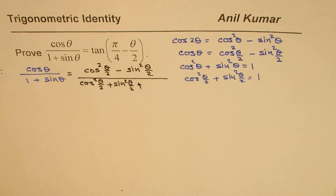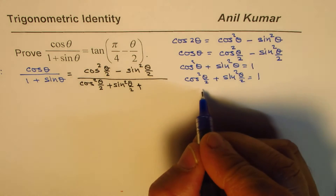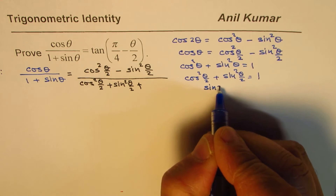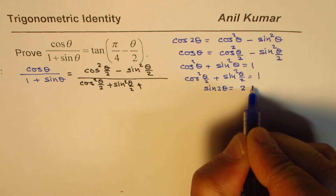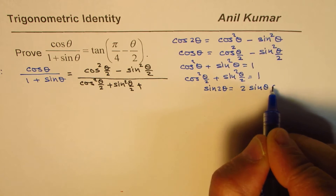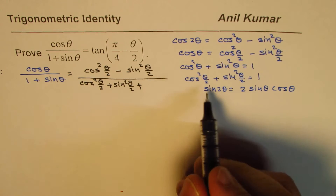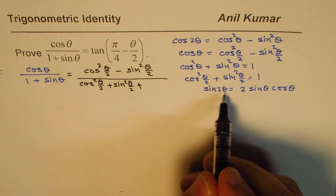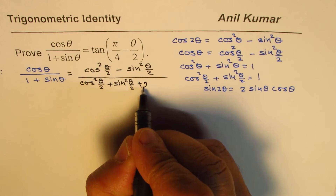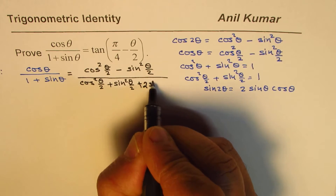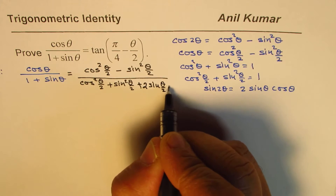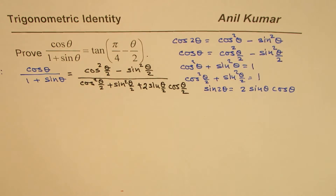Can we write sin θ in θ/2 terms? Yes — we have the related formula sin 2θ equals 2 sin θ cos θ. Dividing the angle by 2, sin θ can be written as 2 sin(θ/2) cos(θ/2). That is how we translate all angles into half-angle form.